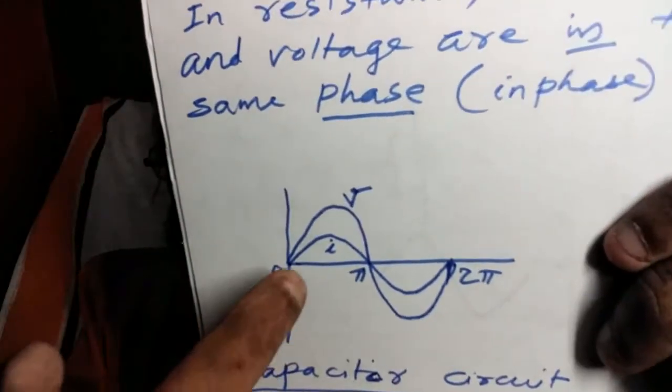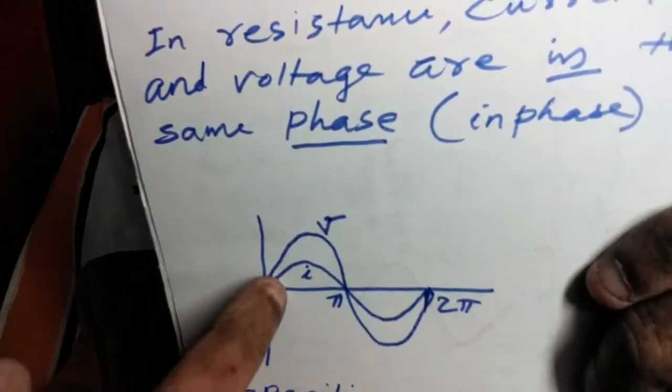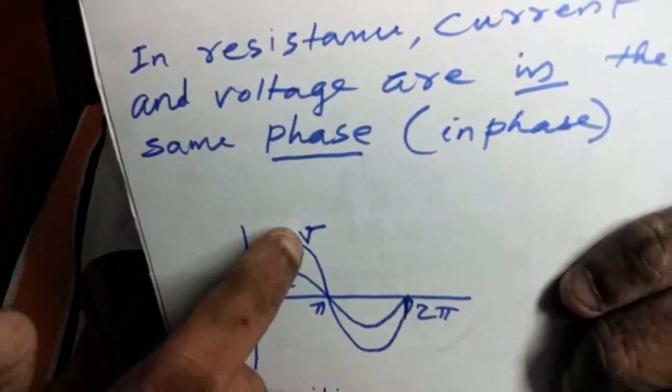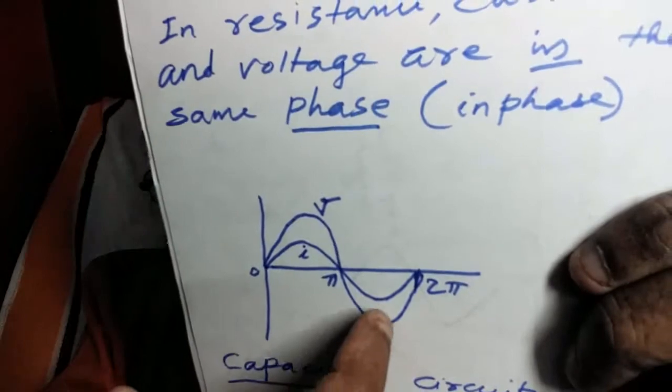In phase means: when voltage is zero, current is also zero. As voltage increases to maximum, current also increases to maximum simultaneously. As voltage decreases to zero, current also decreases to zero. When voltage becomes maximum negative value, current also reaches the maximum negative value. So current follows exactly the pattern of voltage simultaneously. Peak values or maximum values of current and voltage reach simultaneously. That is why we say current and voltage are in the same phase, and resistance is called an in-phase component in AC circuits.